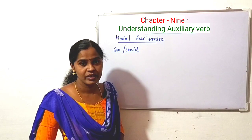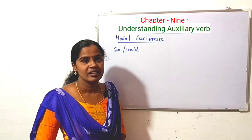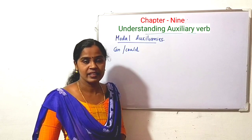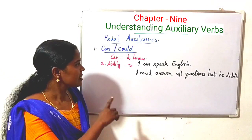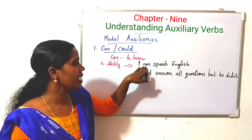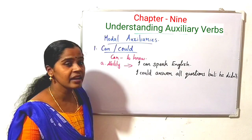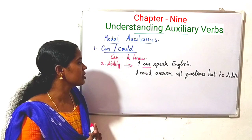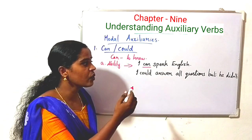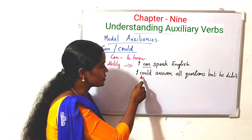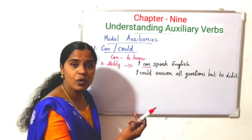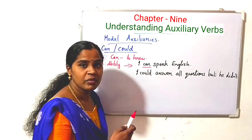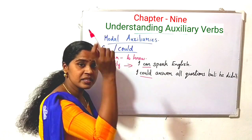Let's discuss can and could. Could is the past form of can. Can expresses ability. For example: 'I can speak' — here it means 'I am able to speak English.' Then see the next example: 'I could answer all questions but he didn't.' Here it refers to past ability — 'I could answer all questions' shows past ability.